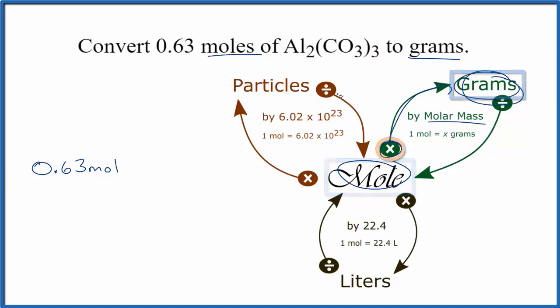We find the molar mass by adding up the masses of all the atoms from the periodic table. If you need help with Al2CO33, aluminum carbonate, there's a link in the description.